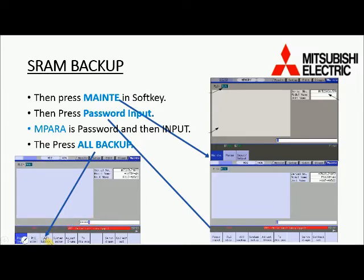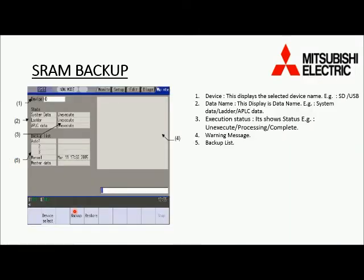When the machine accepts the password, it will highlight all backup buttons in the softkey. Then press the ALT BACKUP softkey. The first field is device, which displays the selected device name — for example, SD or USB.